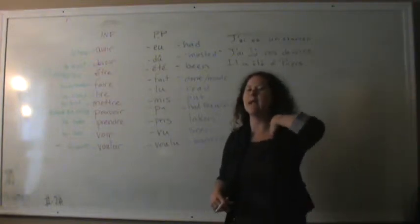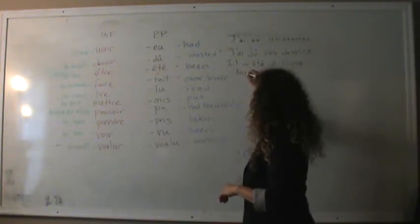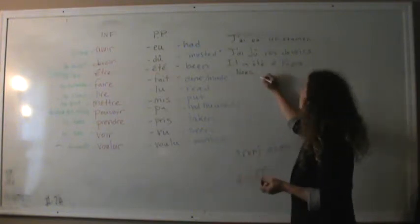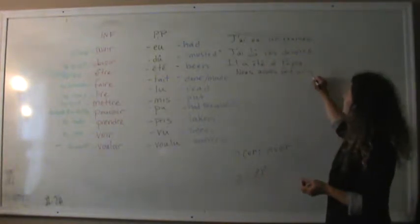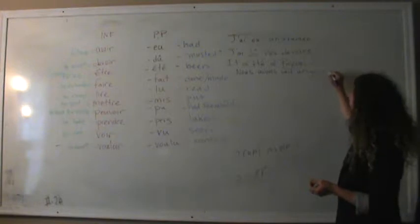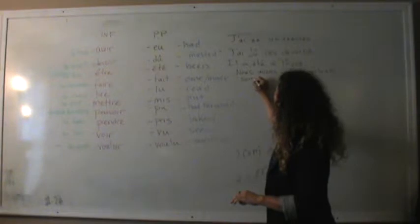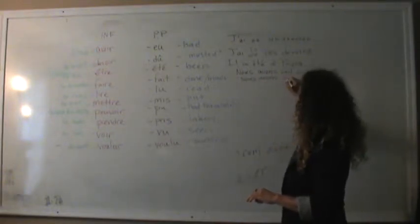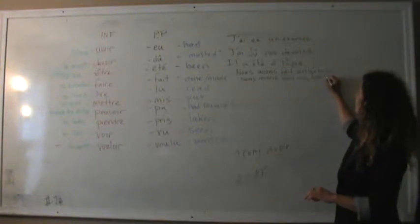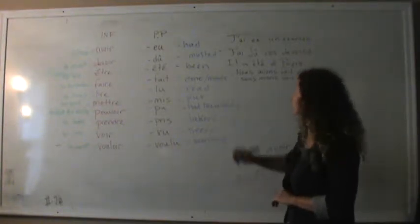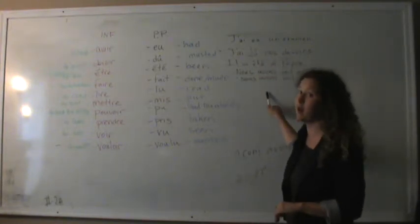If I wanted to say, we have made a cake, right? Yes. Nous avons fait un gâteau. Or if I wanted to say, we have done our homework. Nous avons fait nos devoirs. We have done our homework. This is we had to do our homework, which is why we have done our homework, alright?